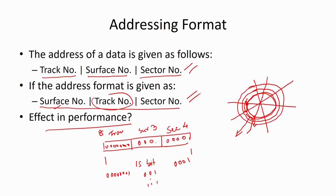Question 4: Explain how the performance of a magnetic disk is measured — this depends on data transfer time: seek time, rotational latency, and transfer time. Question 5: How do we measure the capacity of a hard disk? We know the number of tracks, number of sectors, number of surfaces, and block size — using these we can calculate the capacity. The addressing format also affects performance: when we increment the surface number after completing a track, moving from surface 1 to surface 2 requires the head to switch surfaces.